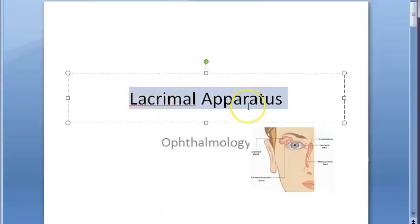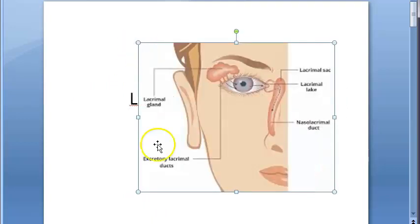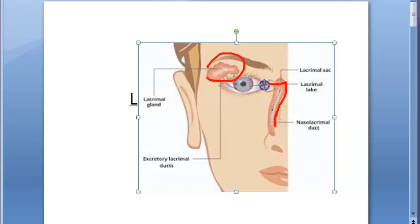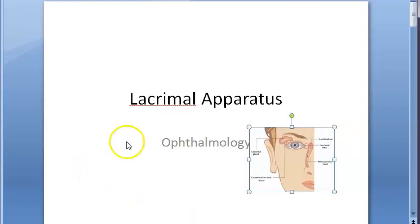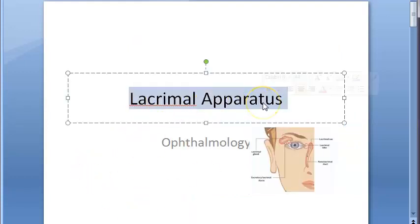In this video, let us look at the lacrimal apparatus. The lacrimal apparatus consists of the lacrimal gland and the lacrimal passages. The lacrimal passages include the puncta, the canaliculi, the lacrimal sac, and the nasolacrimal duct. All these together form the lacrimal apparatus.